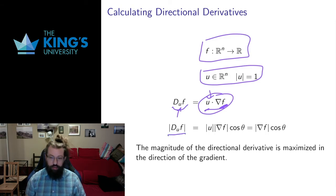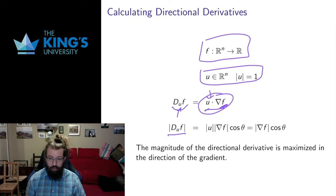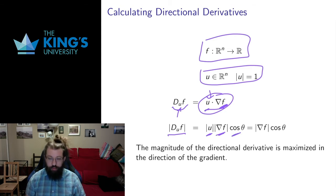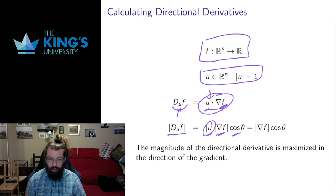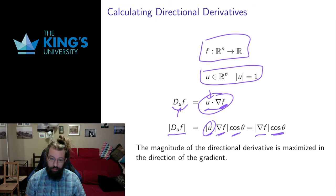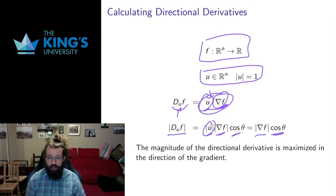I can ask for the magnitude of this rate of change. This rate of change is a scalar — a dot product — but it could be positive or negative. If I look at the absolute value, this is going to be the length of u times the length of the gradient multiplied by the cosine between them, using the dot product identity from earlier in the term. The length of u is just 1, so I get the length of the gradient multiplied by the cosine of the angle between the local direction and the gradient. This is a proof of the thing I mentioned last week: the gradient points in the direction of maximal change.